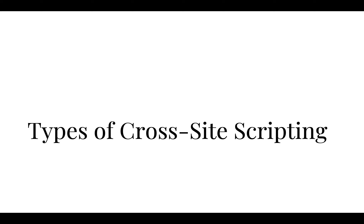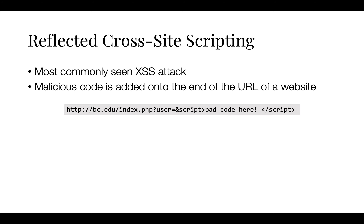Now, we will be discussing two different types of cross-site scripting: reflected and persistent. Reflected cross-site scripting is the most commonly seen XSS attack, where malicious code is added onto the end of a URL of a website, as seen in the example below. A user may receive this link from a phishing email that asks them to click it. The first part of the link looks safe and is a domain that we all recognize, but the code injected in the URL is malicious.